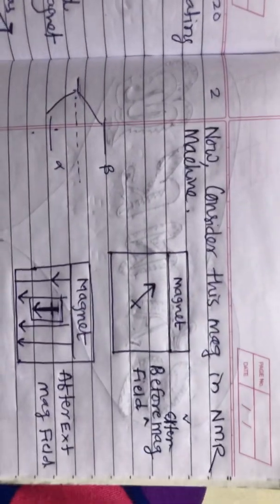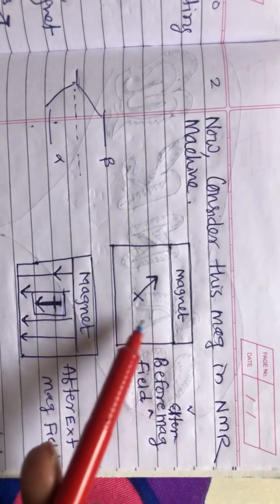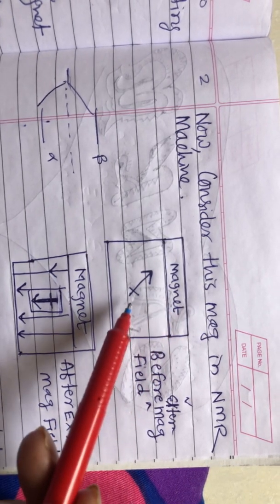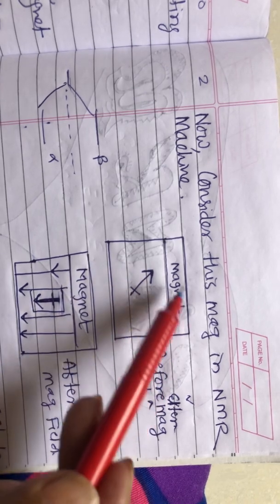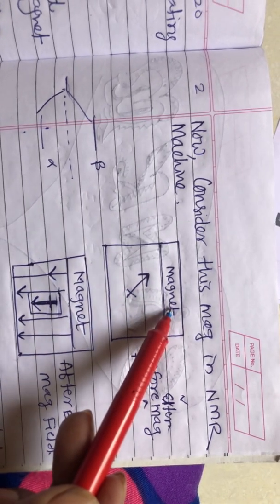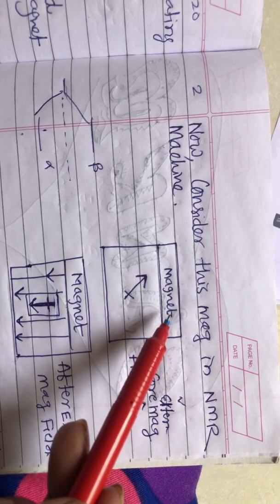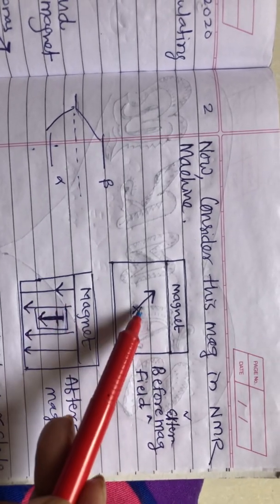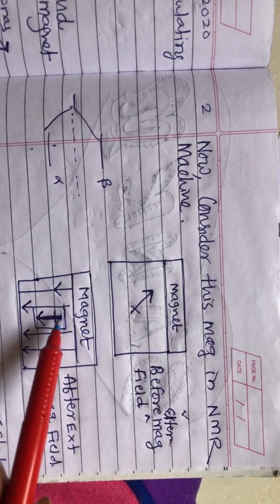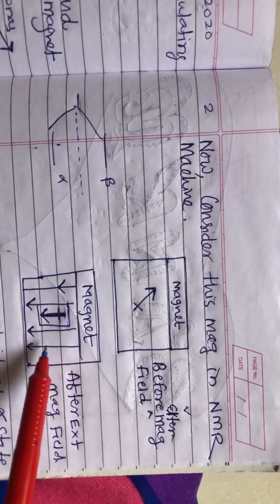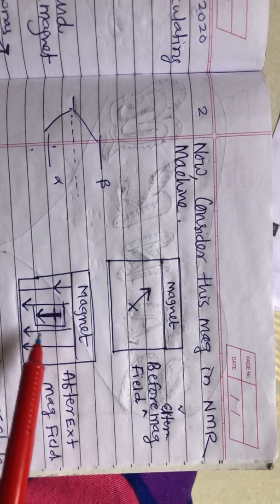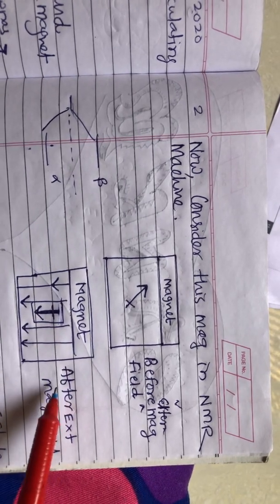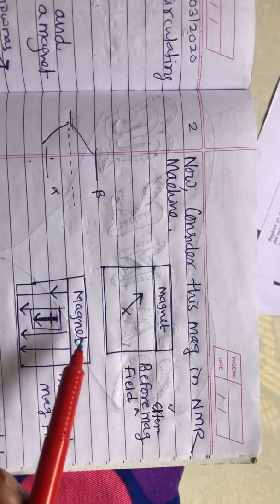This magnet in the magnetic field, when we put it in the NMR machine, the NMR machine has a magnet. When we start the magnetic field, we call it an external magnetic field. This magnet will orient on the same side or along with the external magnetic field. This is before external magnetic field, and this is after external magnetic field.